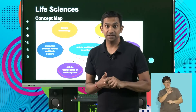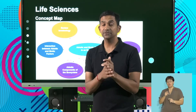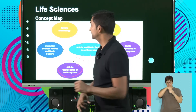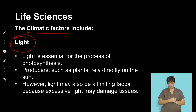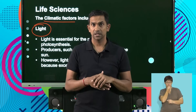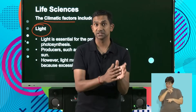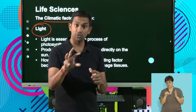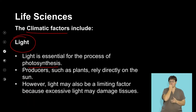Let's continue looking at abiotic factors. We've looked at the edaphic factors. Let's move on to the other factors that influence the living organisms in their environment. The next group of factors are the climatic factors. The first factor we're looking at is light, and we know that light is important for one of the most crucial processes — photosynthesis. It's important that we recognize that even animals are affected by light. Light is essential for the process of photosynthesis, and our producers rely directly on that light.